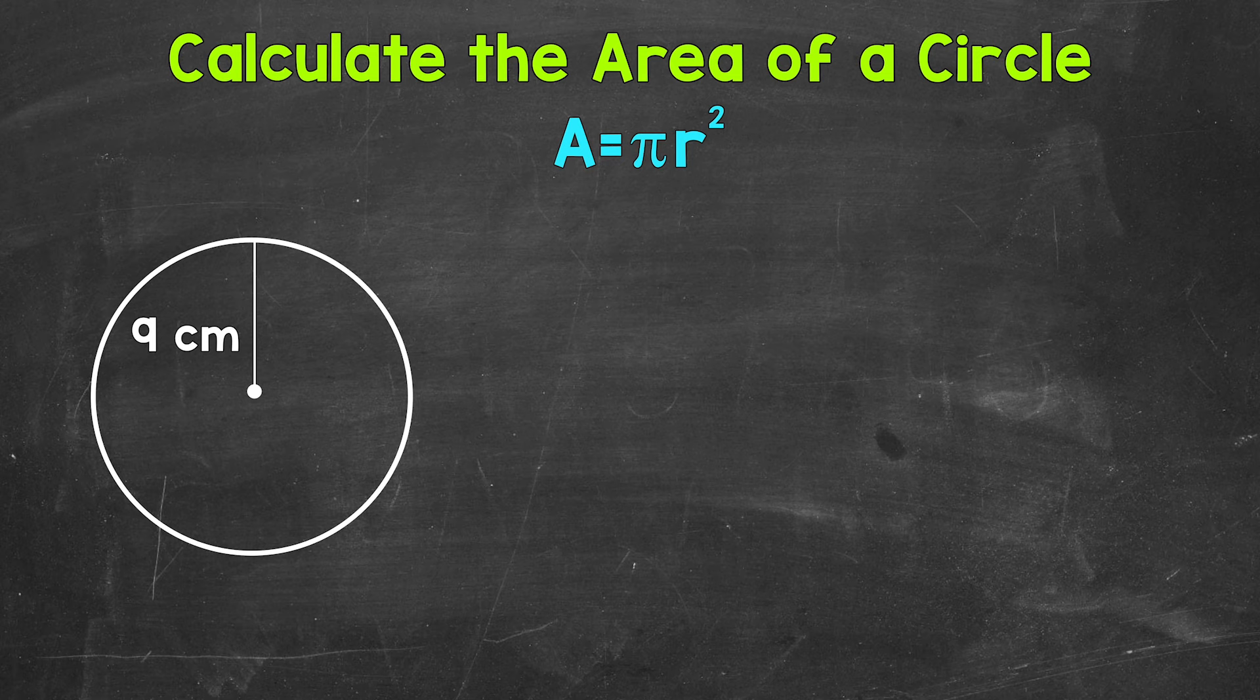With that being said, let's jump into our example where we have a circle with a radius of 9 cm. Now the first thing that I'm going to do is write out the formula for the area of a circle. So area equals pi r squared.